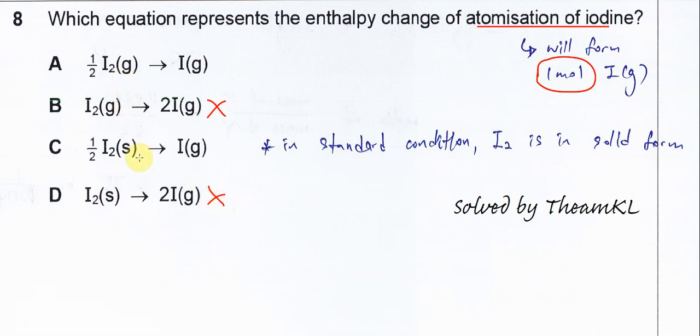A and C are quite close, differing only by the state. Because this enthalpy change occurs under standard conditions, and under standard conditions iodine is a solid, C is the answer.